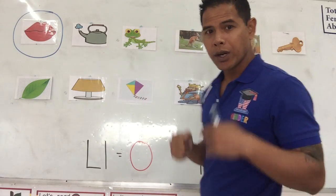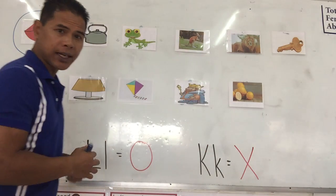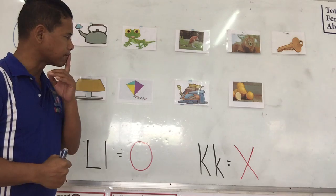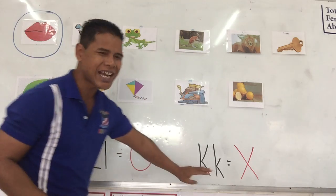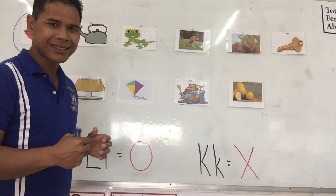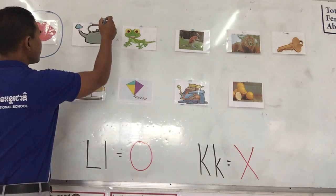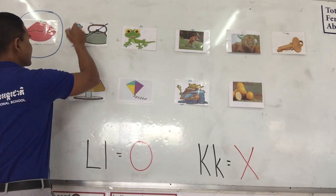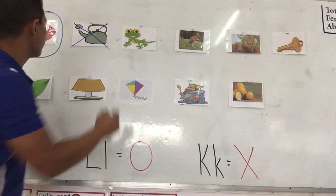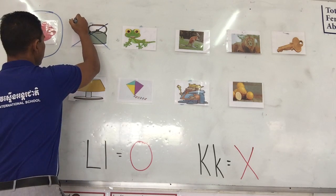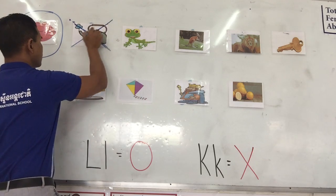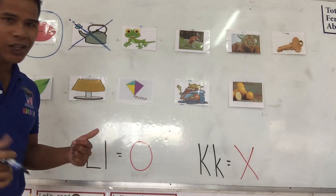Next one: kettle. Is it L or K? Kettle. Yes, it's the letter K. So what do we do with it? Yes, we put an X. We cross it. We put an X on it. Excellent job.